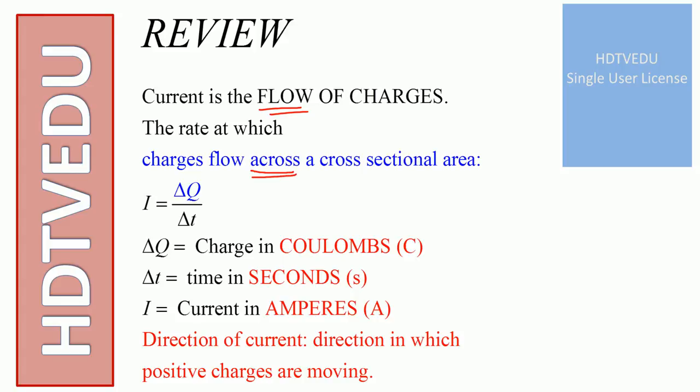This is given by I equals ΔQ divided by Δt. ΔQ is the charge in coulombs, Δt is the time in seconds, I is the current in amperes. Coulombs per second is the unit called amperes.